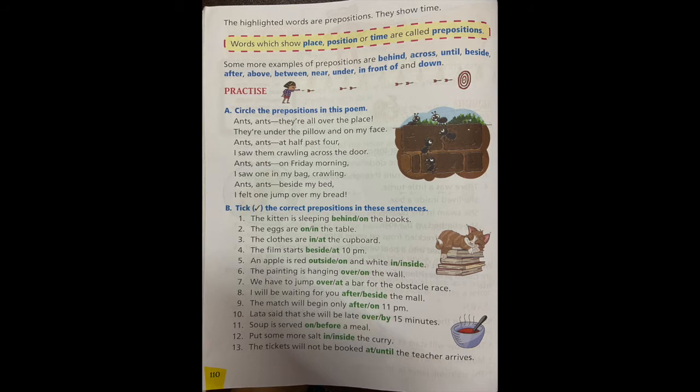The kitten is sleeping dash the books. Where is the kitten sleeping? On the books. Yes, it is sleeping on. Right, put a tick on on. Number two: the eggs are dash the table. Where can eggs be? Will they be in the table? No, that will be on the table. Put a tick on on. The clothes are dash the cupboard. Where are the clothes? Will they be at the cupboard? No, at is used to show the time. Here it is in, in the cupboard.